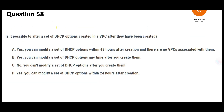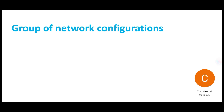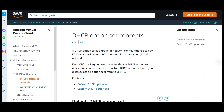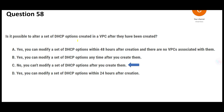Now the next question is about DHCP options sets. DHCP is a group of network configurations that allow EC2 instances to communicate over the virtual network. The question asks whether you can alter a DHCP option set once it has been created in a VPC. The answer is no — you cannot modify it. You must first disassociate the existing DHCP option set and then create a new one.